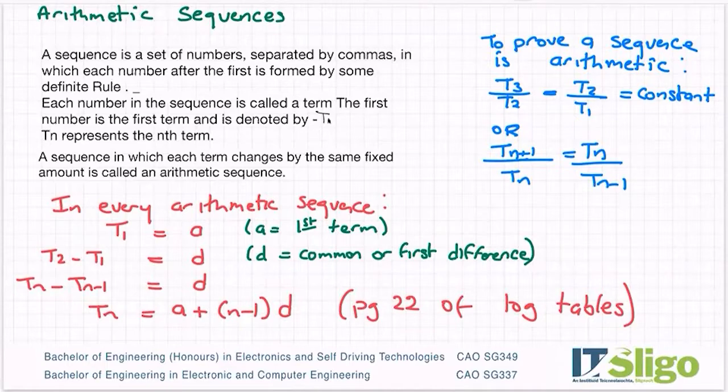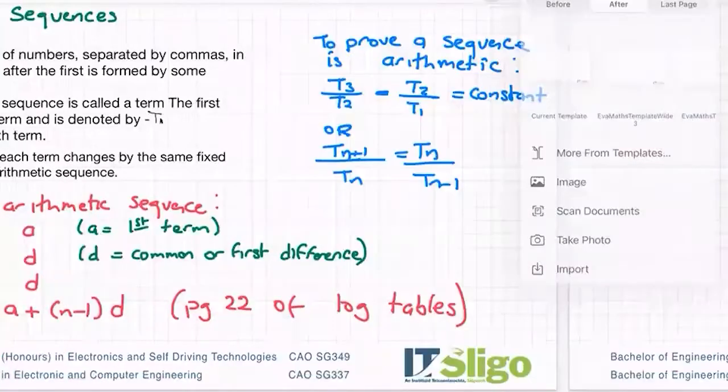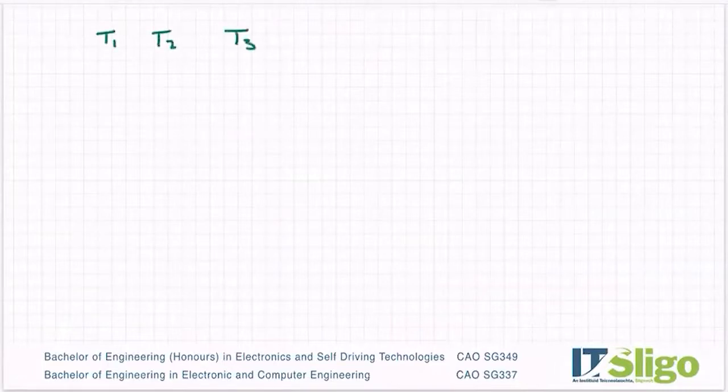Or in more general notation, it would be given as Tn minus Tn minus one. And try not get too freaked out about the Tn's. So if I had T1, T2, well, let me go on to a new page and I'll do it. So if I was to write out the general terms of a sequence, I would write them out as T1, T2, T3, T4, T5, all the way up to Tn minus one, Tn, Tn plus one, and a comma between them all.